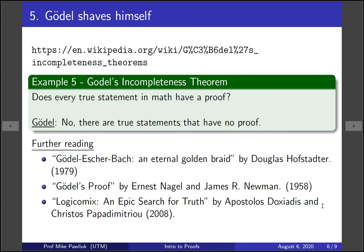And finally, Logicomix: An Epic Search for Truth is a comic graphic novel about the events of the late 1800s and early 1900s, featuring Gödel, Russell, Cantor, and others, covering the developments of all of these ideas.